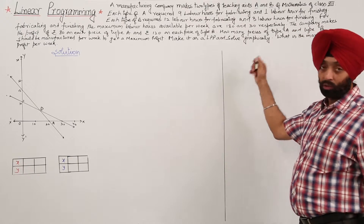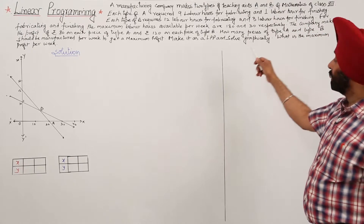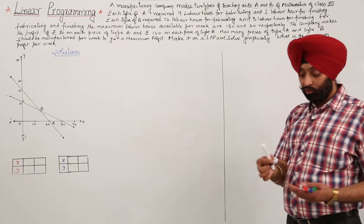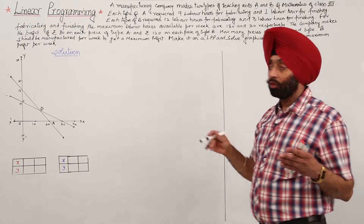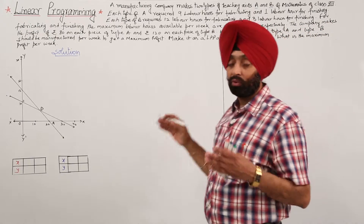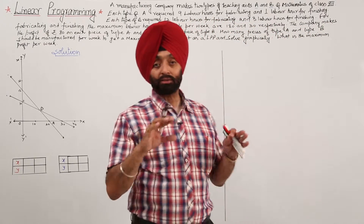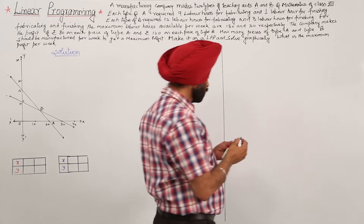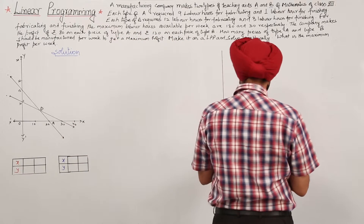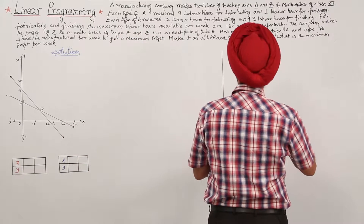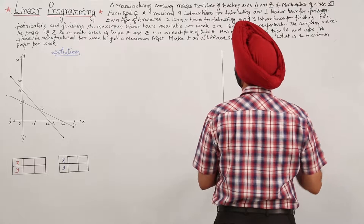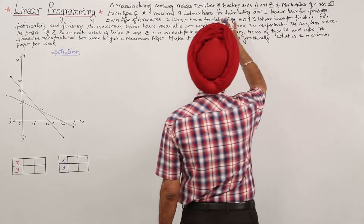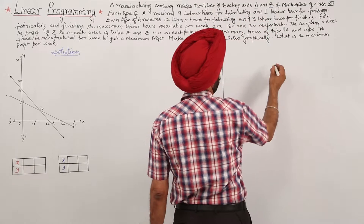Make it an LPP, solve it graphically, and find the maximum profit per week. Before going for it, let's try to make a table. We are having 9 labour hours for fabricating.